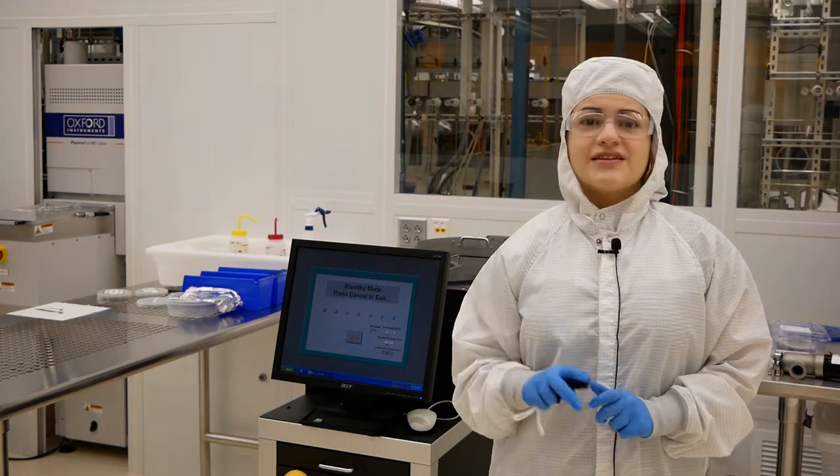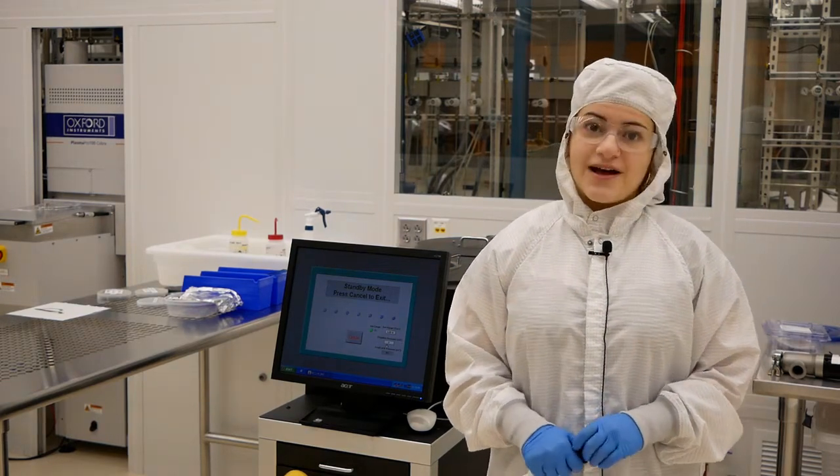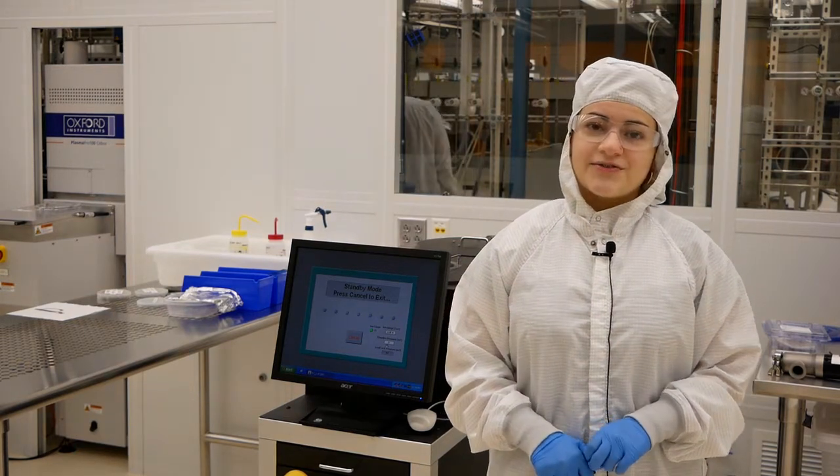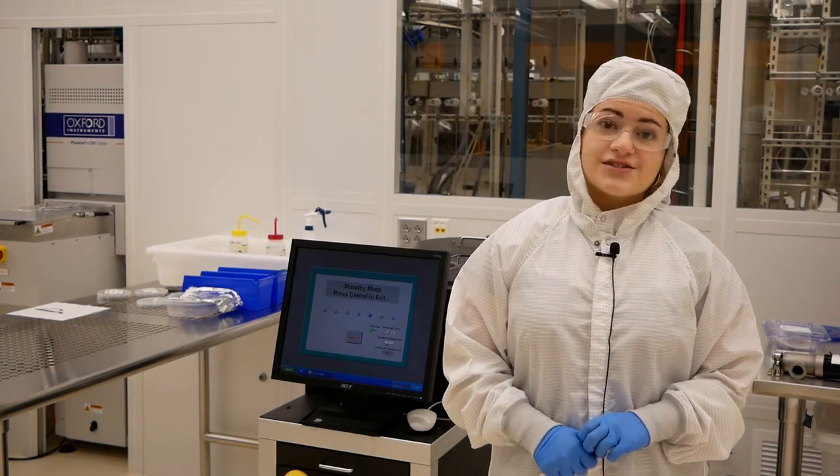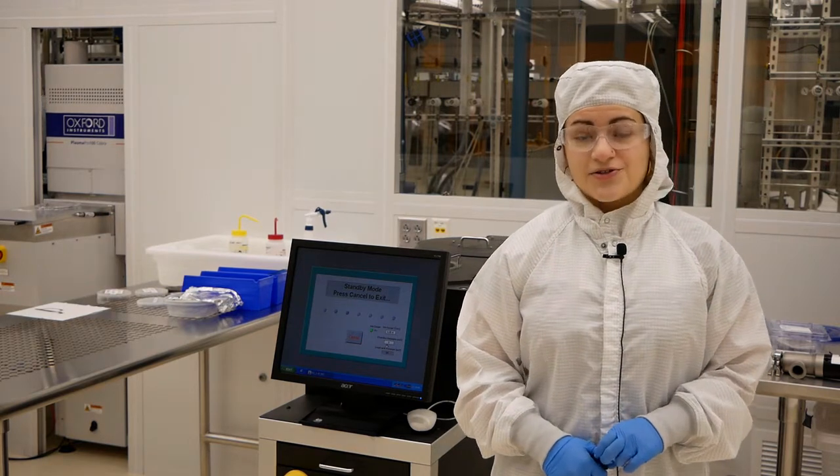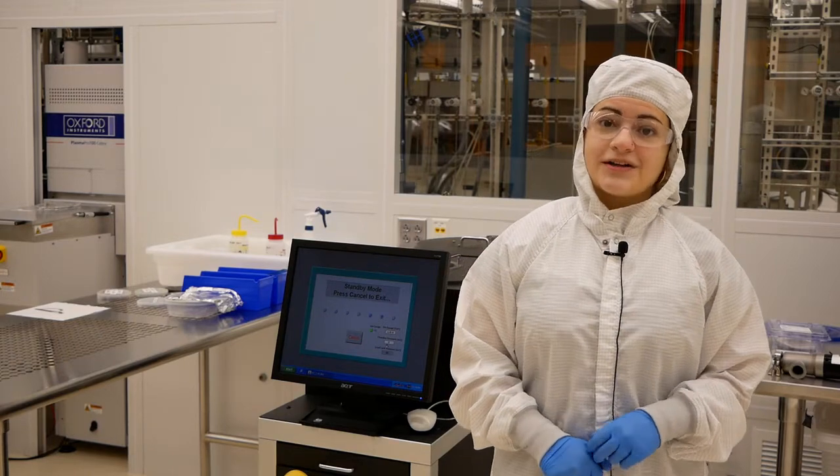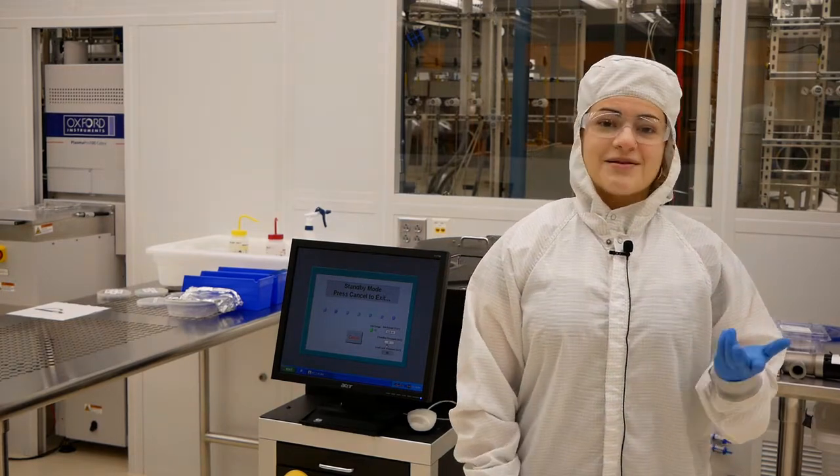There are two methods we can use to remove materials: wet etching or dry etching. Wet etching uses a liquid chemical to remove material from the surface. In contrast, dry etching uses a plasma to remove material from a surface. Today, we'll etch SiO2, or glass, using wet and dry methods.